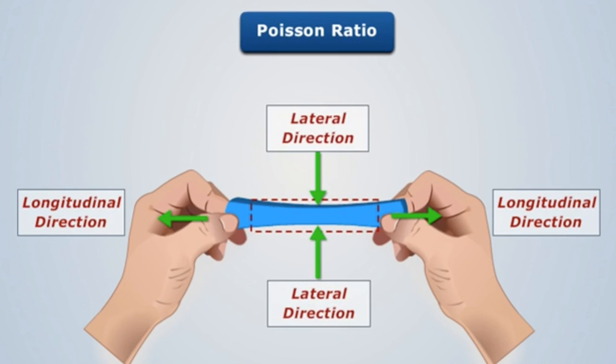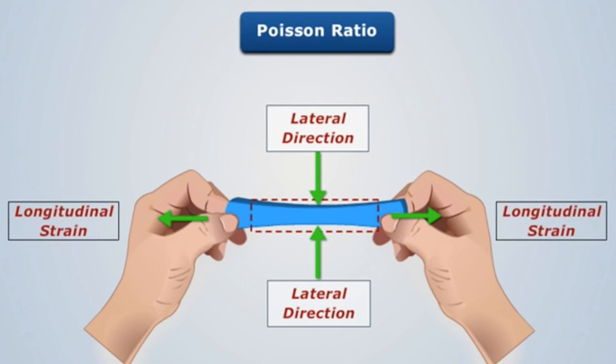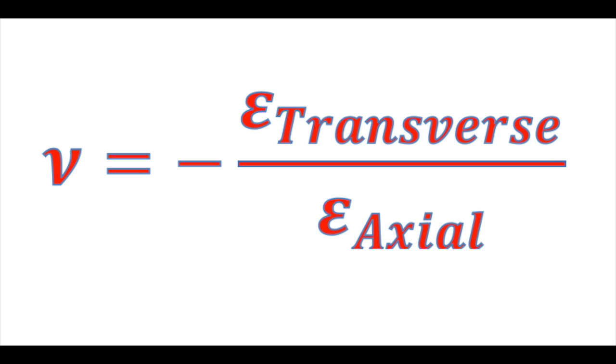The applied force results in a change in length, which can be characterized by a longitudinal and lateral strain. The ratio of the magnitude of the resulting transverse and axial strains from the axial load is called Poisson's ratio.